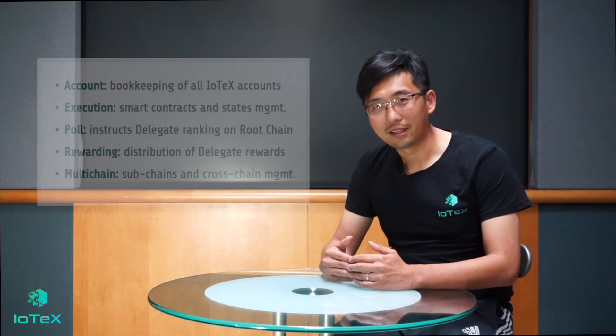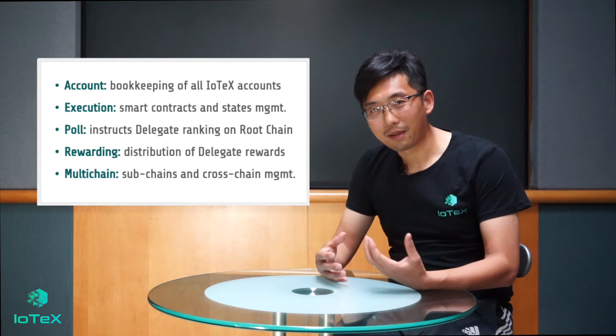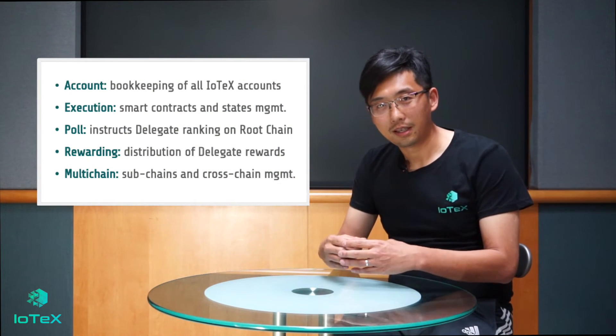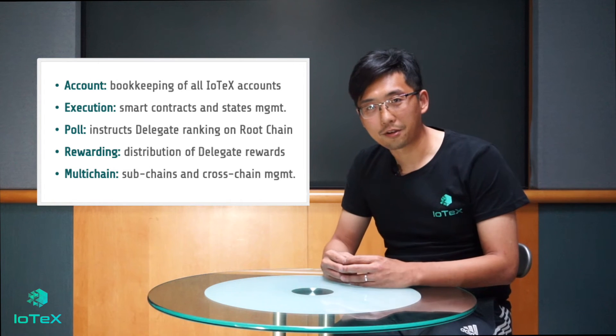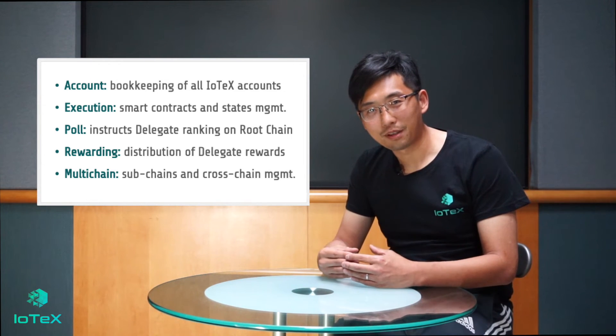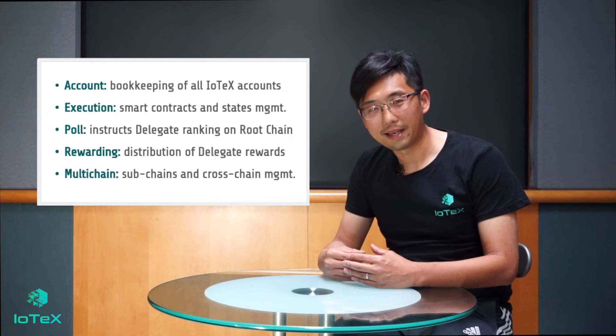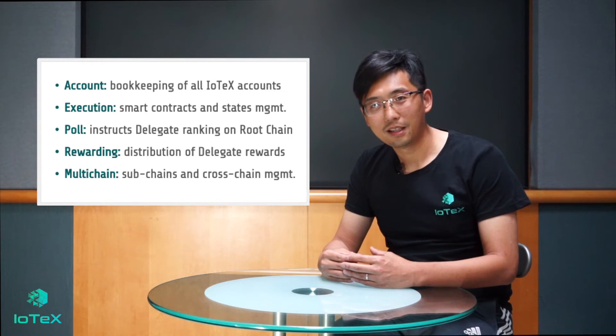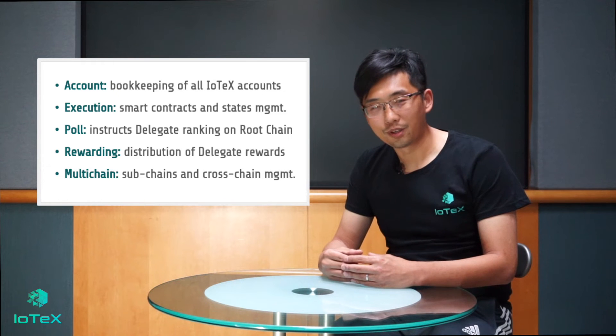The third component is Extensible State Transition. IoTeX's State Transition module is designed to be extensible in the main protocol, meaning a new subprotocol can be plugged into the main protocol easily without compromising security and performance. There are five subprotocols included in Mainnet Alpha: accounting, execution, polling, rewarding, and multi-chain.